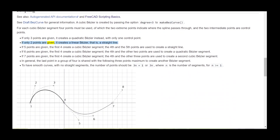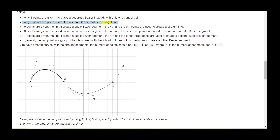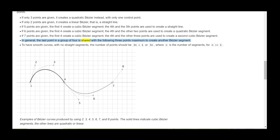If only 2 points are given, it creates a linear Bezier curve — that is, a straight line. If 5 points are given, the first 4 create a cubic Bezier segment, and the fourth and fifth points are used to create a straight line. If 6 points are given, the first four create a cubic Bezier segment, and the fourth and the other two points are used to create a quadratic Bezier segment. If 7 points are given, the first four create a cubic Bezier segment, and the fourth and the other three points are used to create a second cubic Bezier segment. In general, the last point in a group of 4 is shared with the following 3 points maximum to create another Bezier segment.